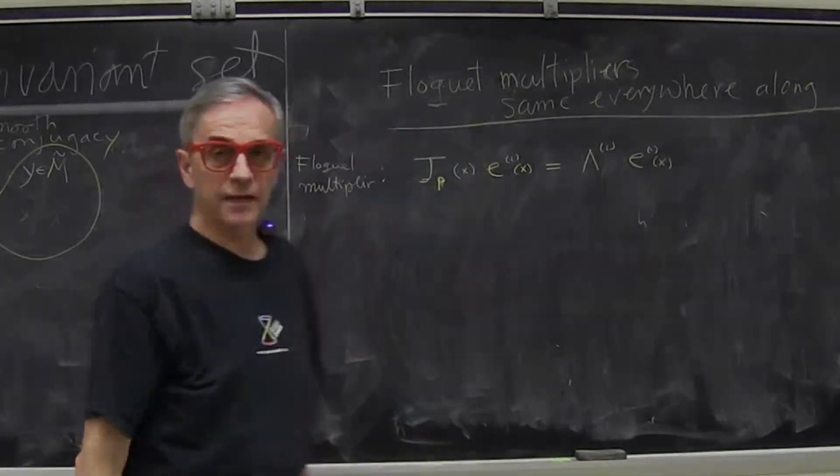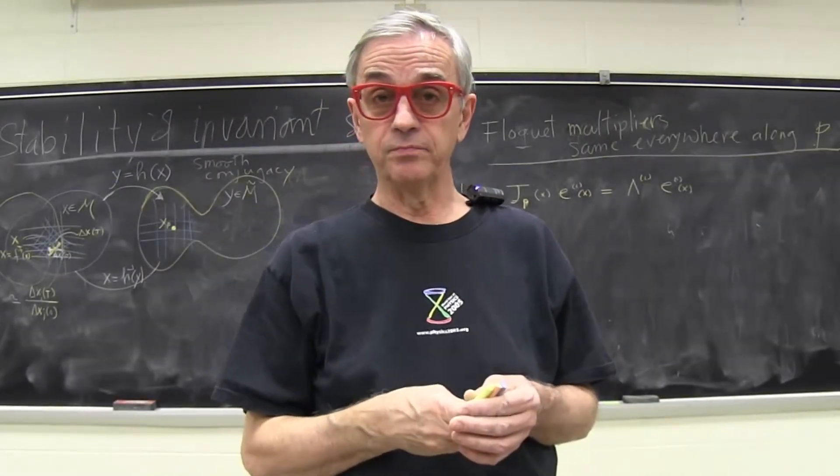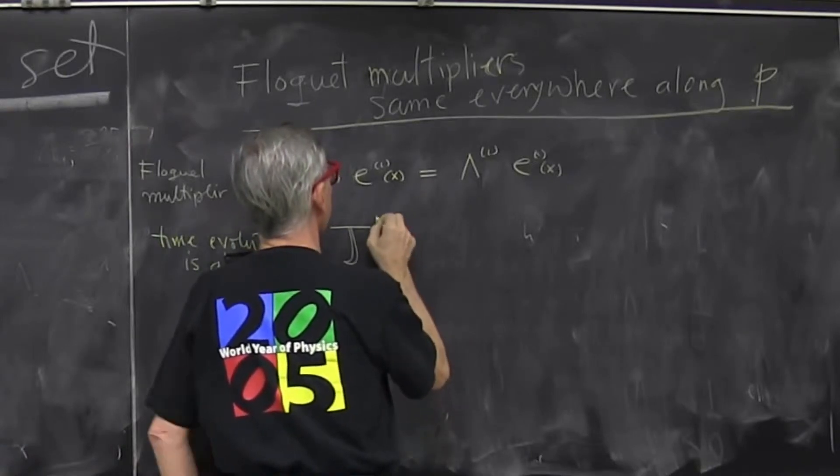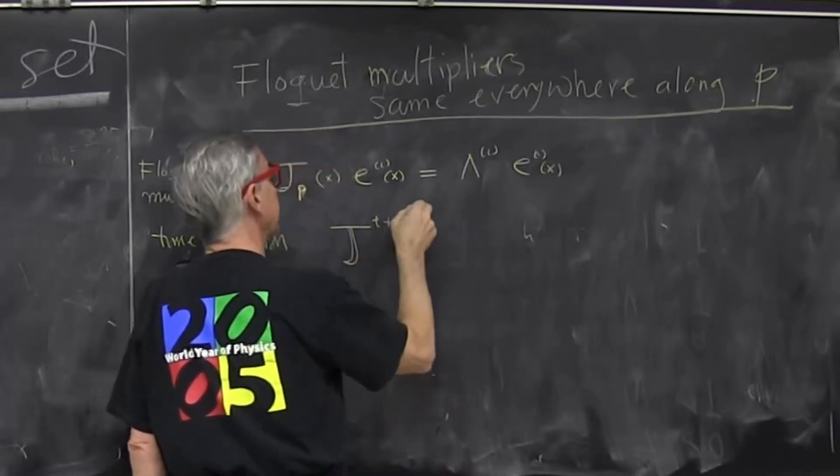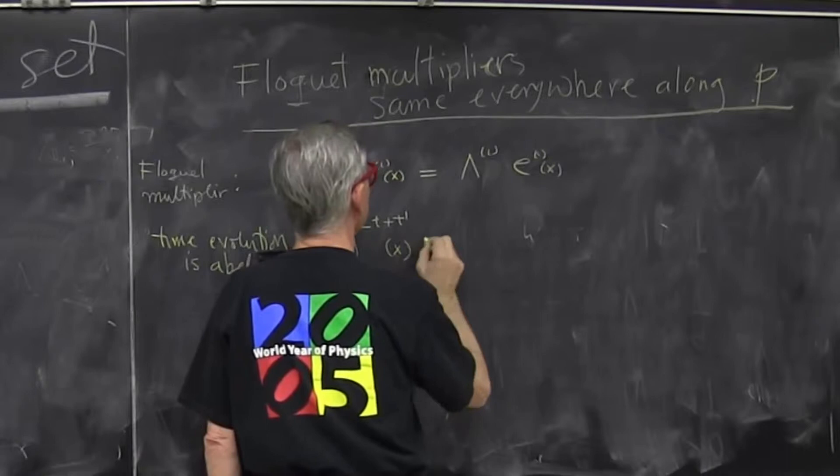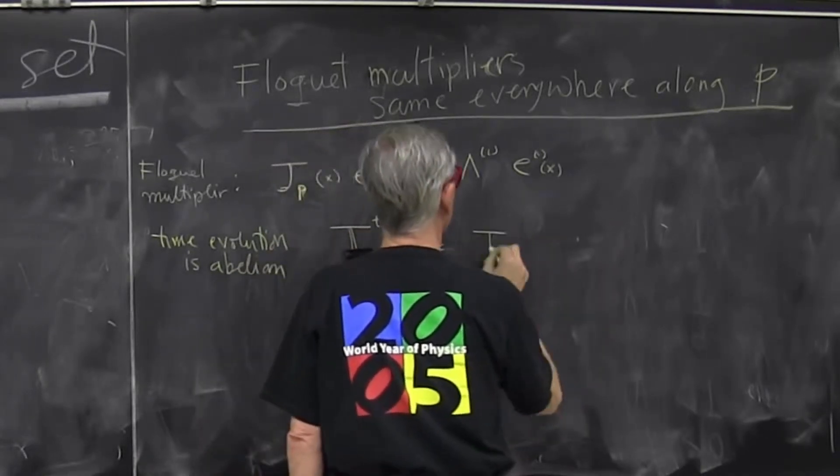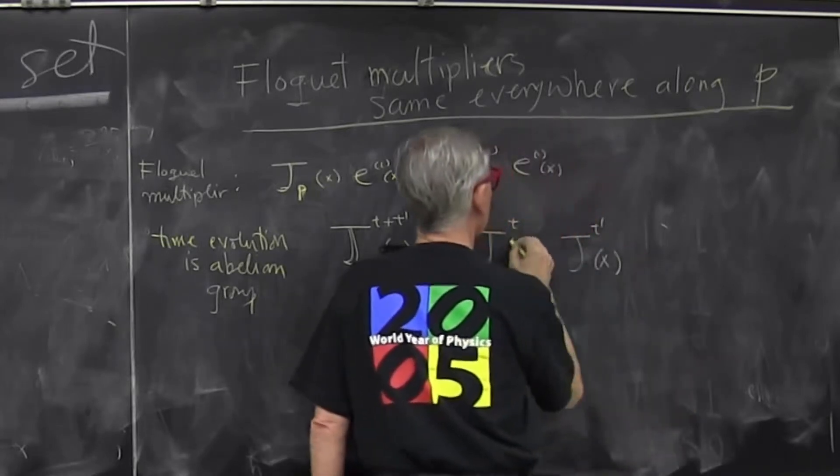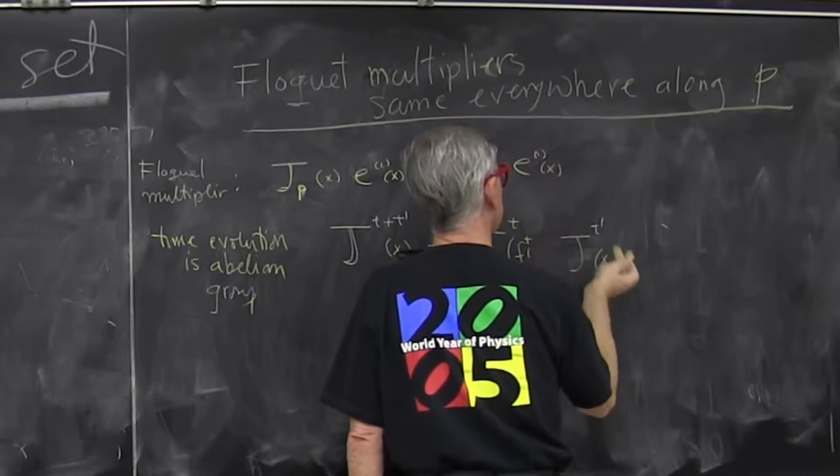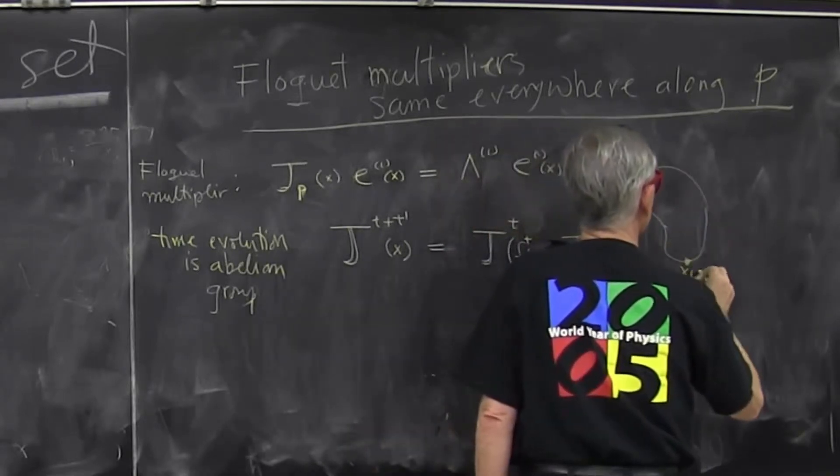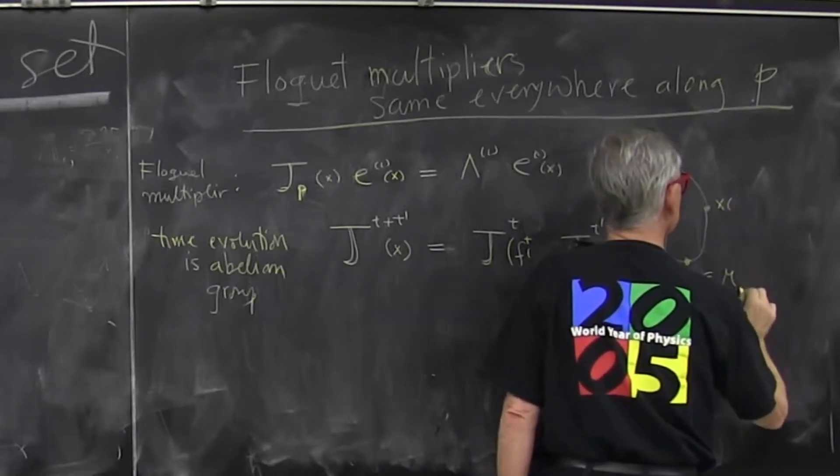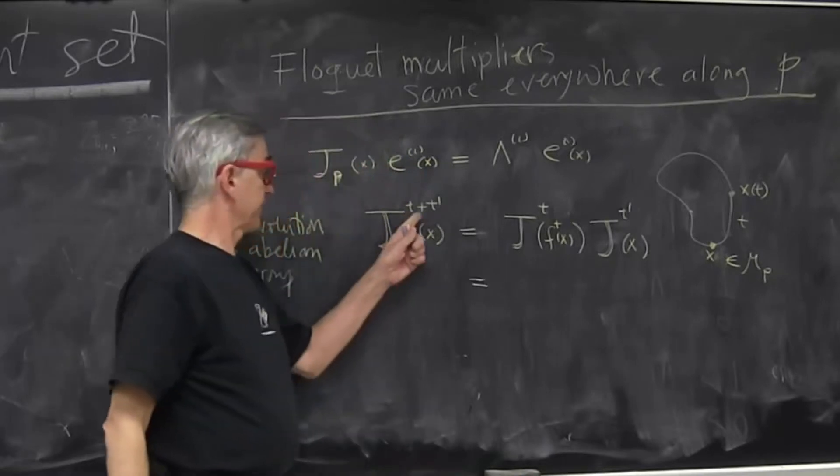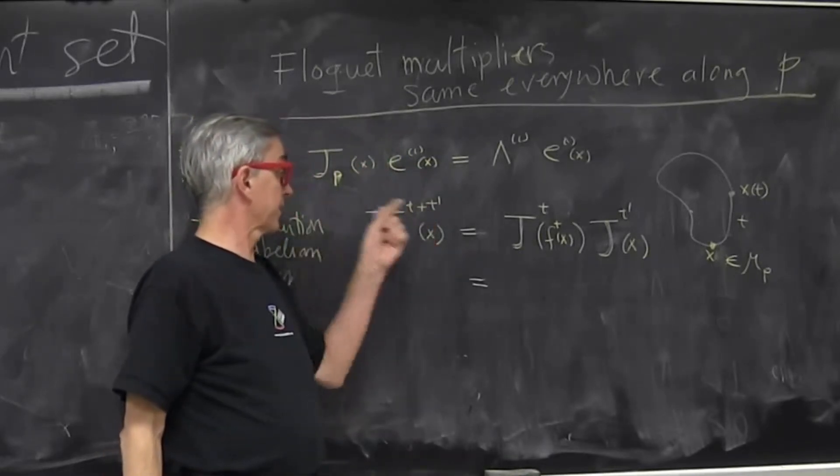So that's a Floquet multiplier. Next, evolution in time is an abelian group. What does that mean? I showed a few lectures ago that Jacobians have a group property that if you go for time t and then time t' having started at some point that's the same as a product. I go first time t' starting at my initial point and then I go to the image on the trajectory. So this is x at time t and this is x element of the period of the orbit. This is where I'm time t later. So that's a group property. Jacobians multiply along the floor. But this is just a real number so I can split it. I can write it as t' + t.